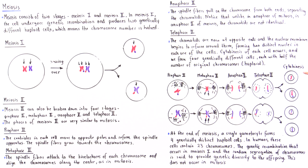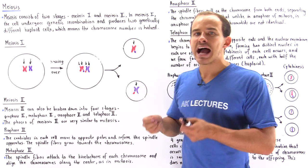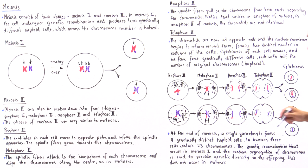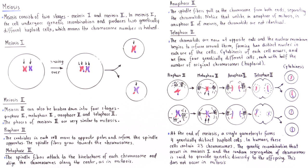Because we have two cells each undergoing this process, at the end we form four individual and genetically different haploid cells. We began with two chromosomes, so these haploid cells will each have only one chromosome. In humans, if we have 46 chromosomes, each one of these cells will contain only 23 chromatids, which are now known as chromosomes.